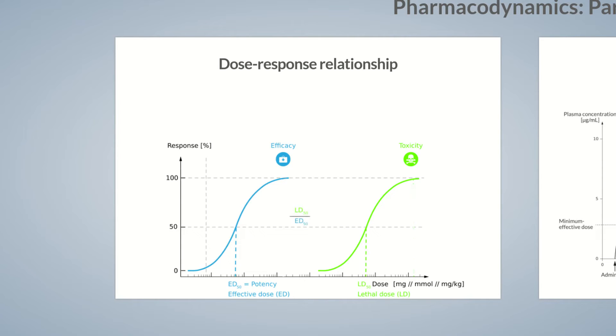The ratio of LD50 to ED50 is termed the therapeutic index and differs for each drug. It's an important measure of the safety of a drug. The higher the therapeutic index, the safer the drug, as the risk of a toxic or lethal overdose decrease.